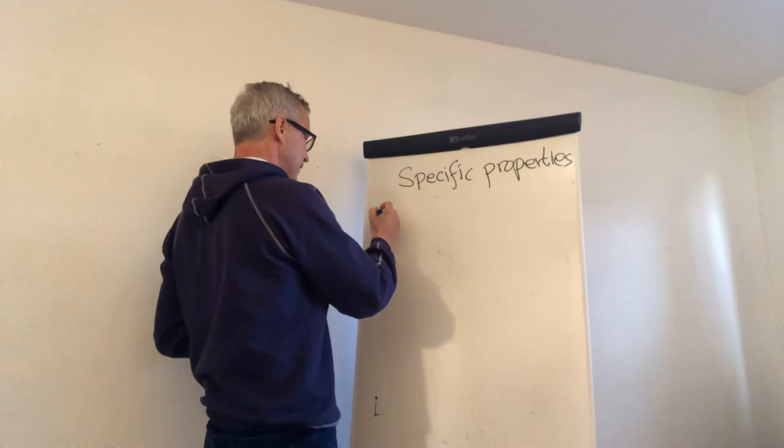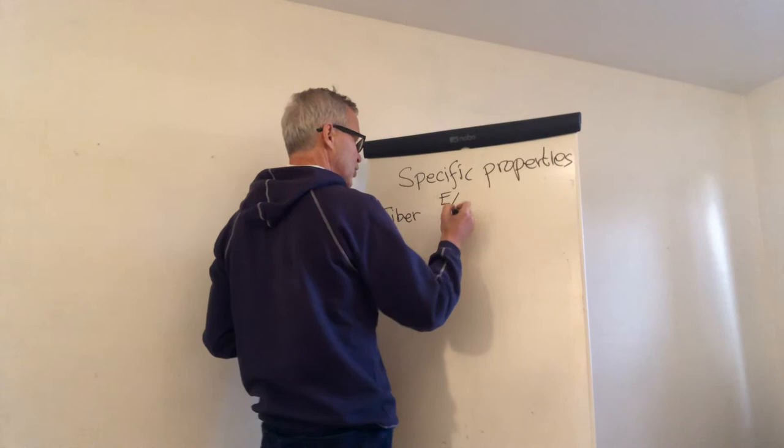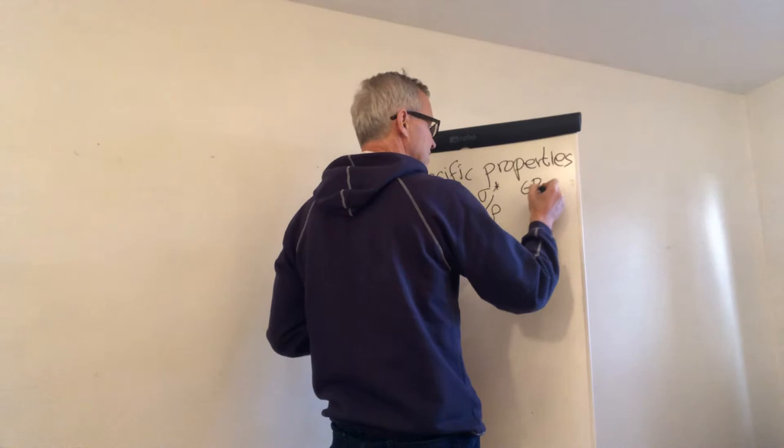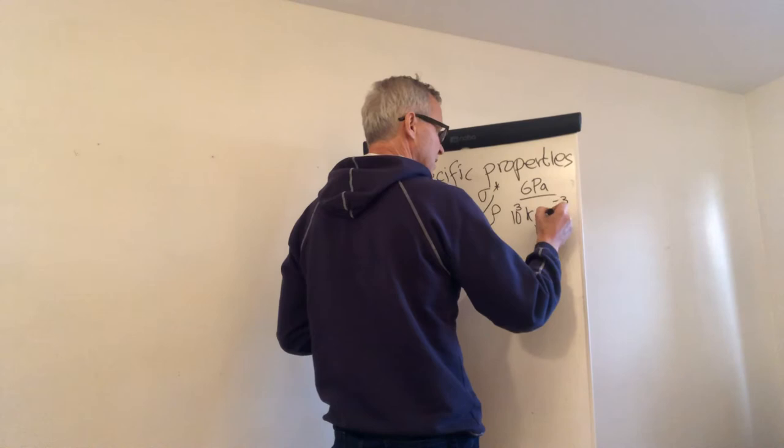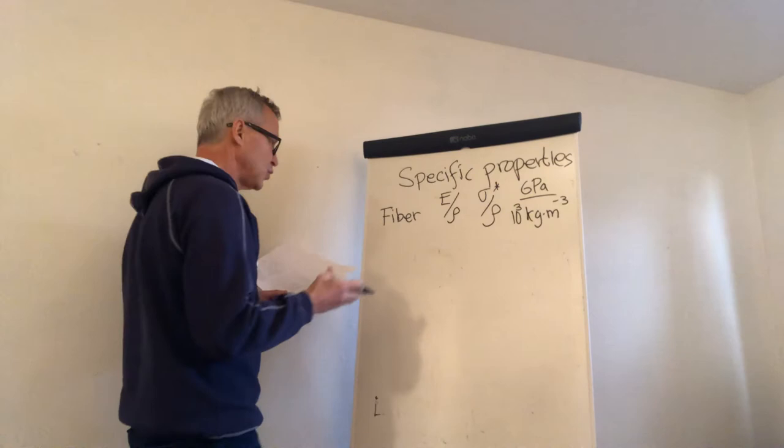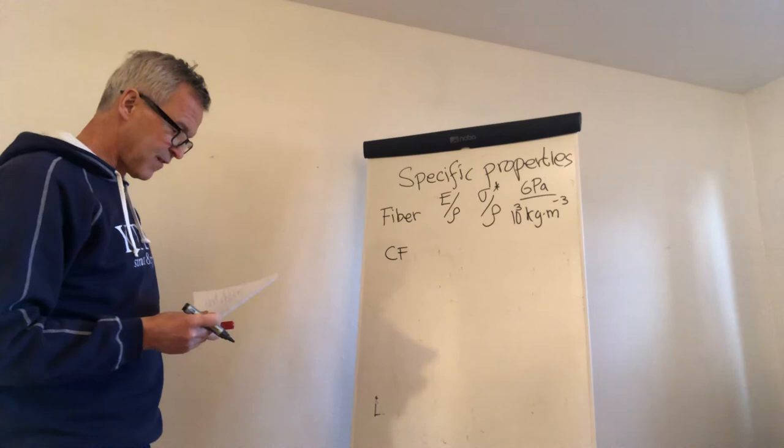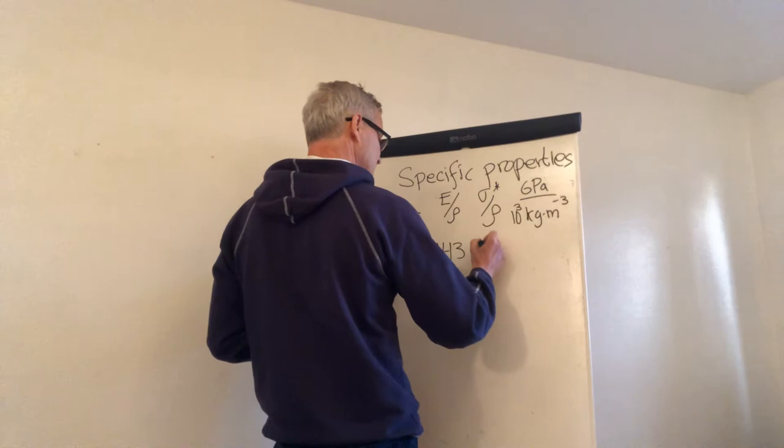So if I do this for the different fibers, and then I provide modulus over density, tensile strength over density, and then I give the units. It's gigapascal and then it's 10 to the power of 3 times kilogram per cubic meter. If I have those units and I take carbon fibers, and I take the standard basic carbon fibers used in the aircraft industry for large-scale production, this number becomes 143.